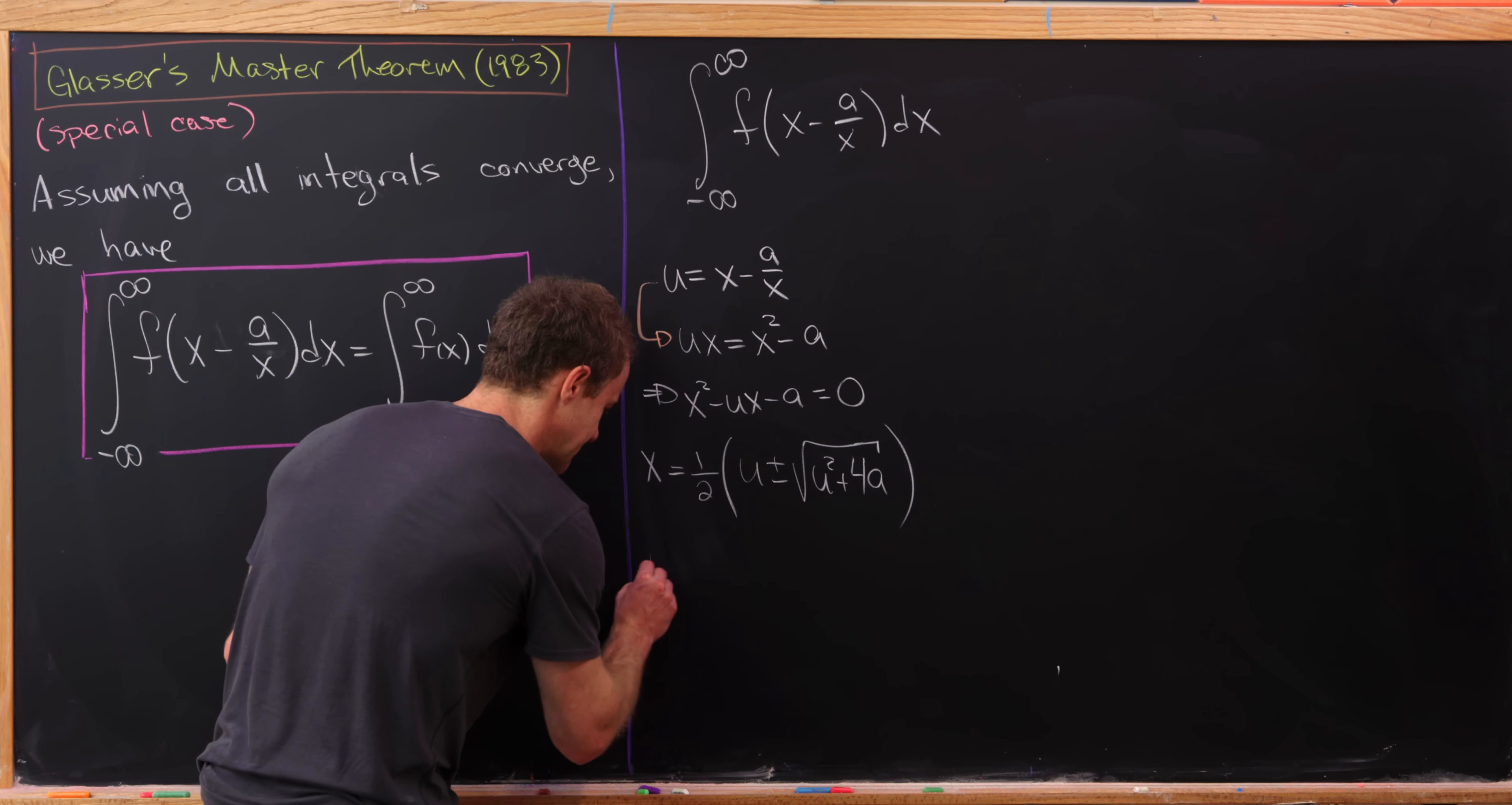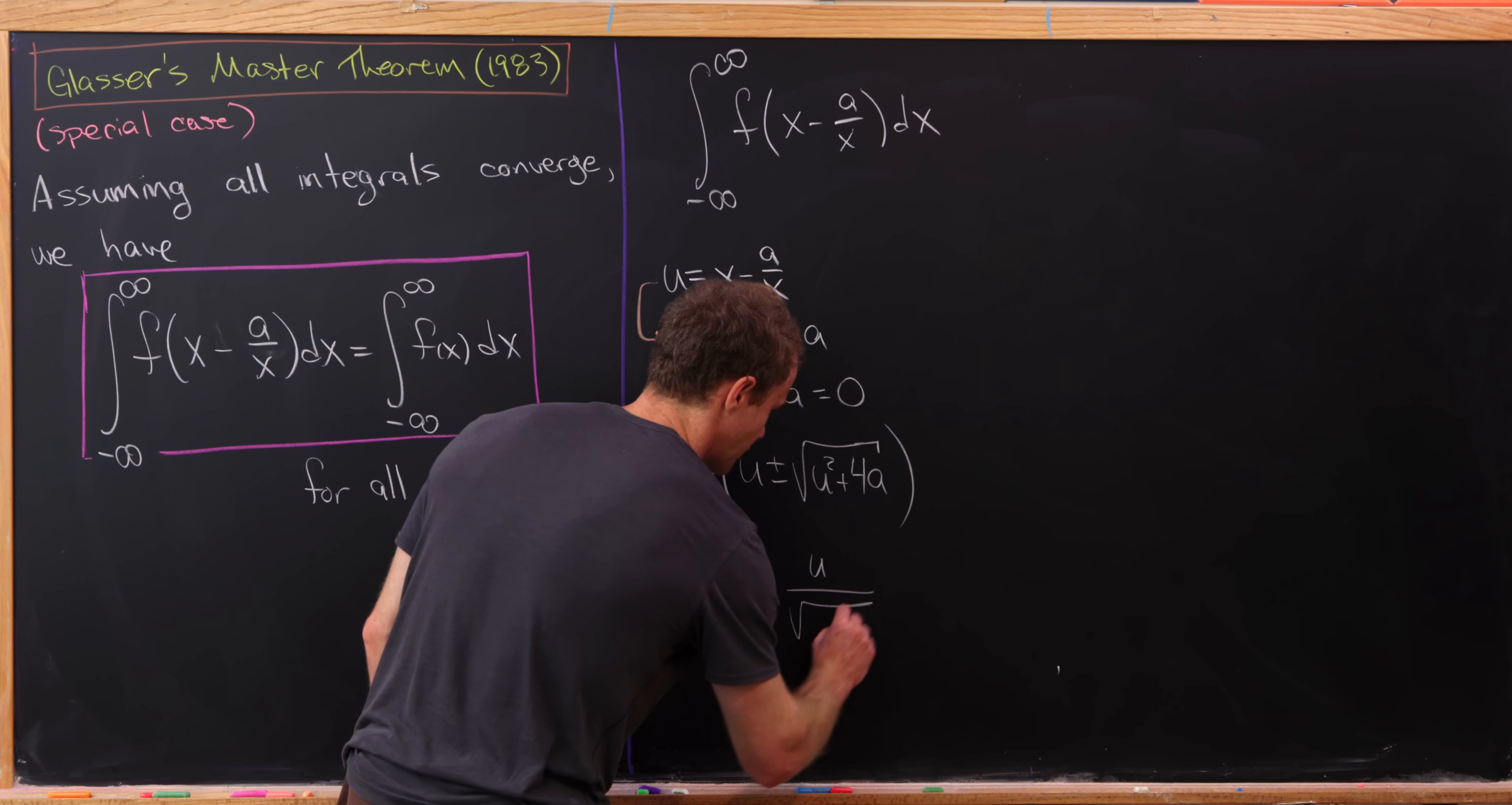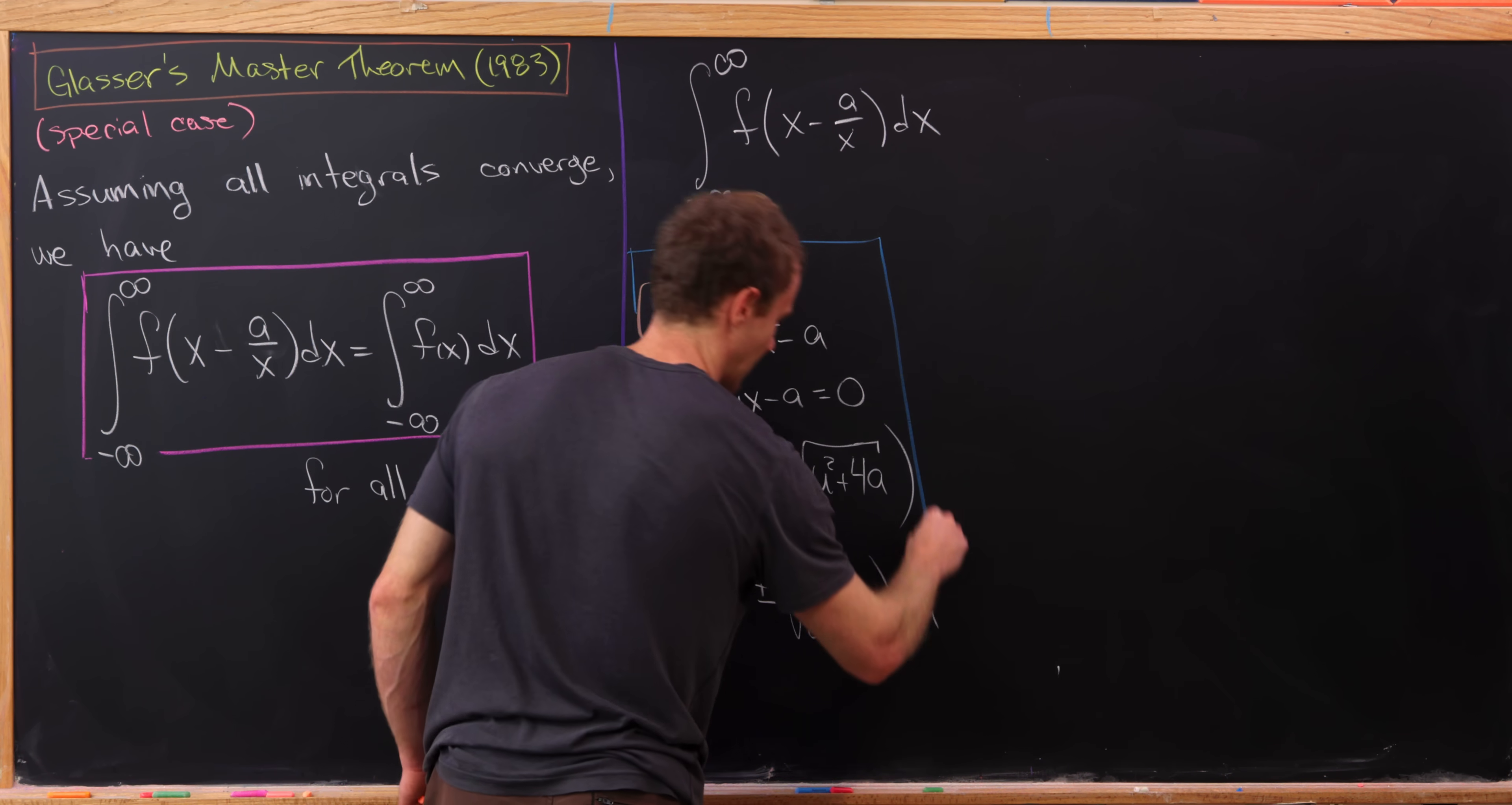So let's calculate dx. So dx will be this half, and then we'll have one plus minus u over the square root of u squared plus four a. And that's just by using the chain rule. So let's put a box around this for now.